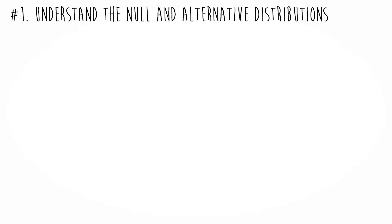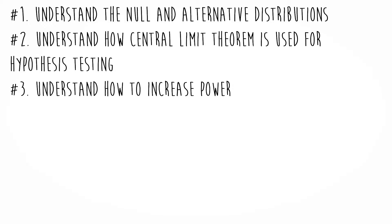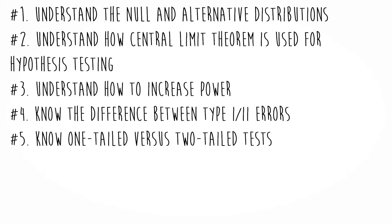Let's review our learning objectives. Number one: understand the null and alternative distribution — the null is the distribution of no difference, and the alternative is anything but that. Number two: understand how the central limit theorem is used for hypothesis testing — we're looking at differences between distributions of means, not raw scores, and that's the central limit theorem. Number three: understand how power relates to distributions of means and how to increase power — we have five ways to increase power. Number four: understand the difference between type 1 and type 2 errors. A type 1 error means falsely rejecting the null, or concluding your treatment worked when it didn't. A type 2 error means falsely retaining the null when it's false, or concluding your treatment doesn't work when it actually does. Finally, understand when to use a one-tailed versus two-tailed test — one-tailed when predicting a direction, two-tailed when you have no idea. Almost all software packages default to a two-tailed test.